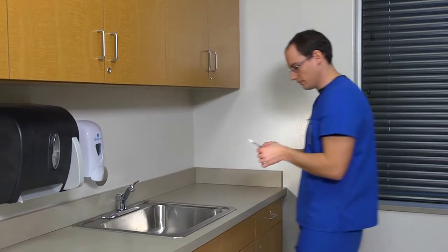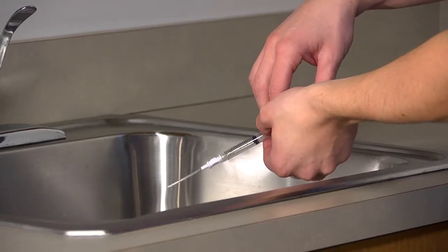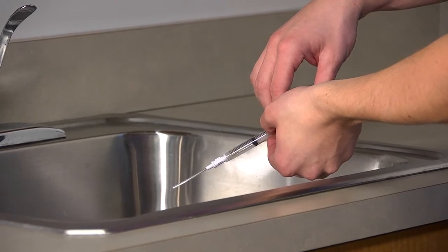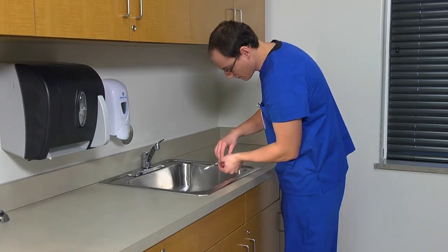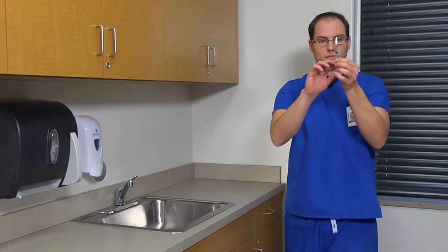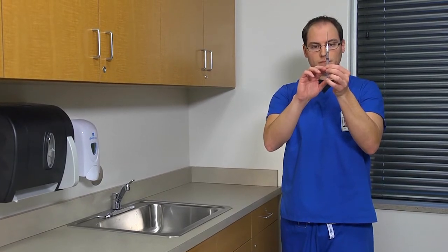If excess fluid is in the syringe, hold it with the needle up and slanted slightly toward the sink. Then slowly eject the excess fluid. Recheck the level by holding the syringe vertically at eye level.